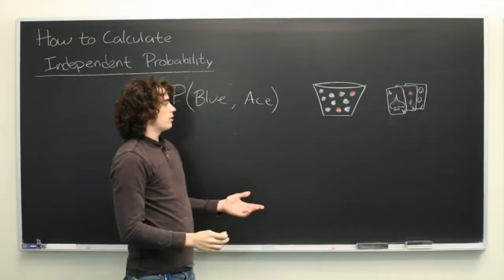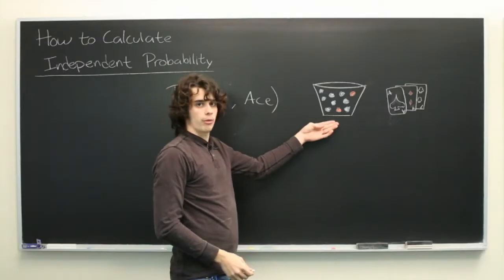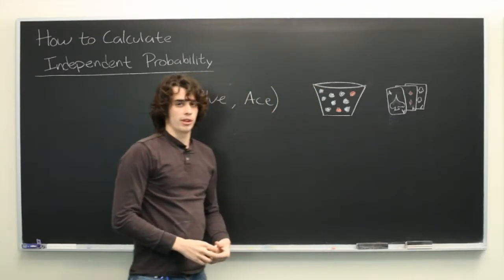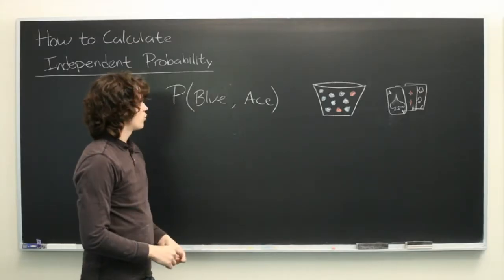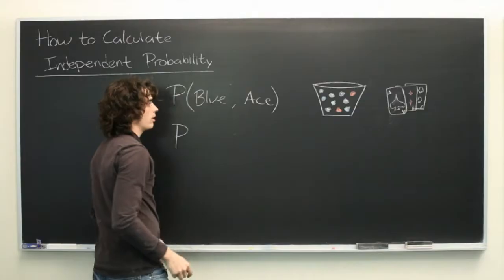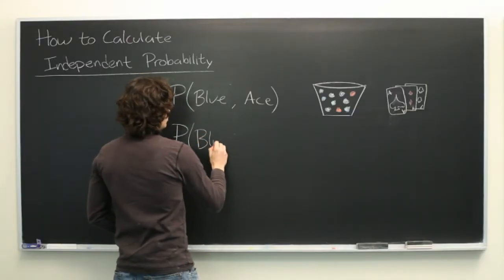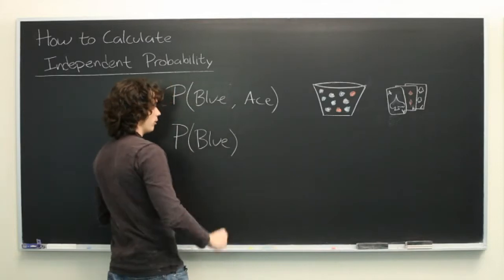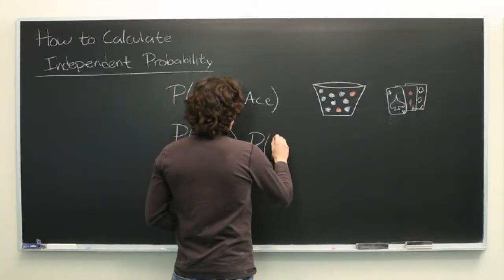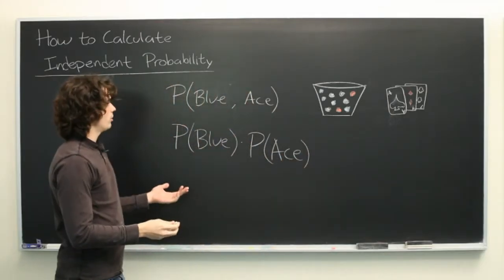These two events are completely independent. The drawing of a particular ball from this bucket will have no bearing whatsoever on the card that is drawn from the deck. So, computing the probability of these two events happening is very simple — it's just the probability of one, in this case the probability of blue, times the probability of the other.